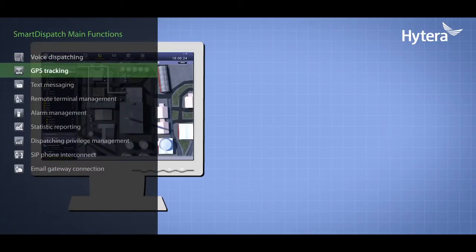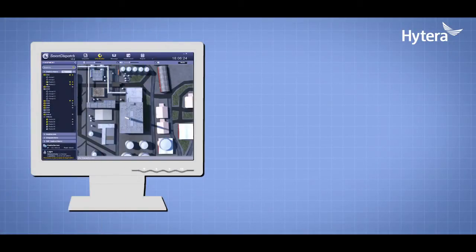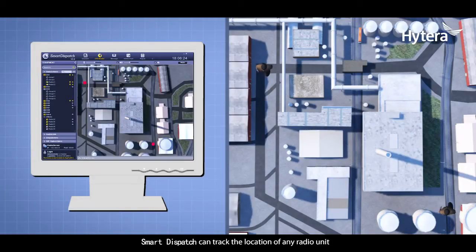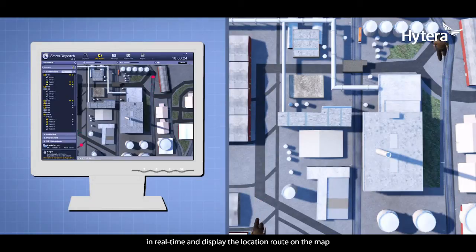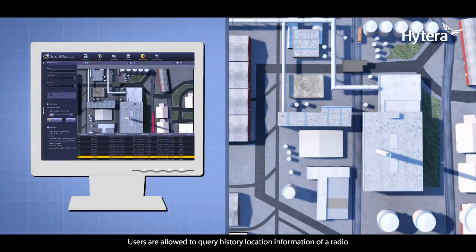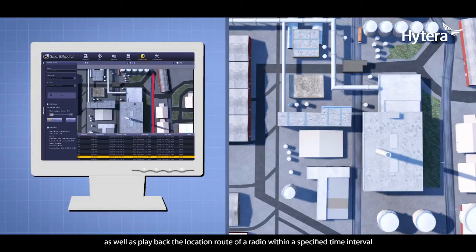GPS Tracking: Smart Dispatch can track the location of any radio unit in real time and display the location route on the map. Users are allowed to query history location information of a radio, as well as playing back the location route of a radio within a specified time interval.